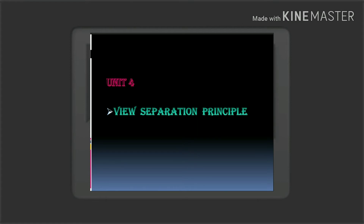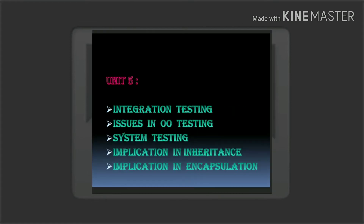Next step is the 5th unit. We have a lot of questions in the 5th unit. They are going to ask questions about issues in over-testing. The implications in inheritance and the implications of encapsulation are covered here. System testing is very important, so you will learn that.